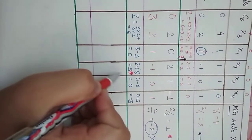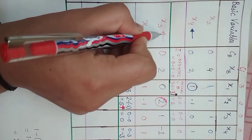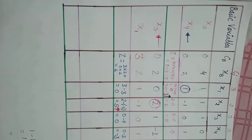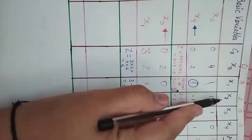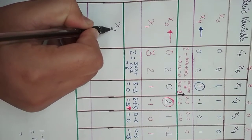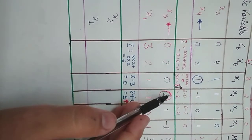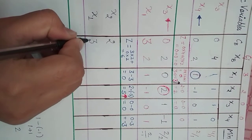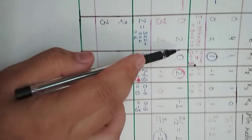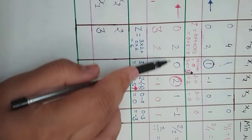The largest positive value in the Zj minus Cj row corresponds to x2. For the minimum ratio test: xb values are 2 and 2. Dividing 2 by 2 gives 1, and 2 divided by minus 1 is negative — we don't use negative values. So the minimum ratio is 1, meaning x3 leaves and x2 enters. The cost for x2 is 2 and for x1 is 3.